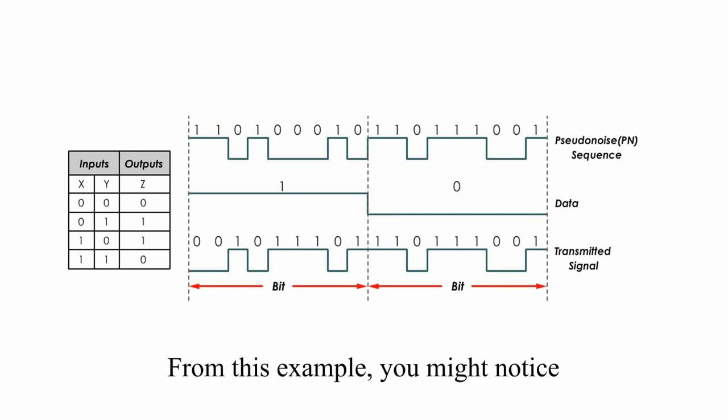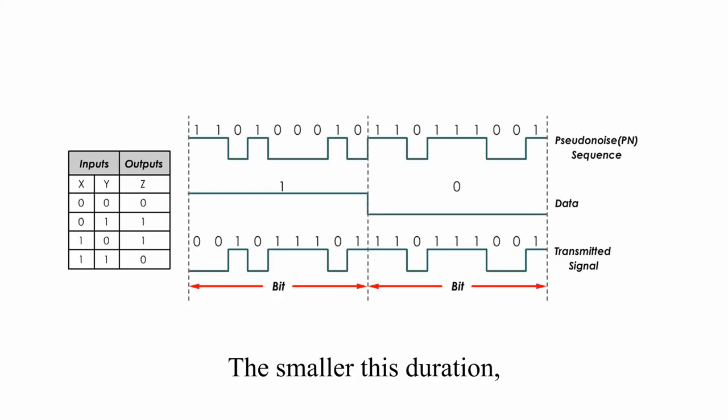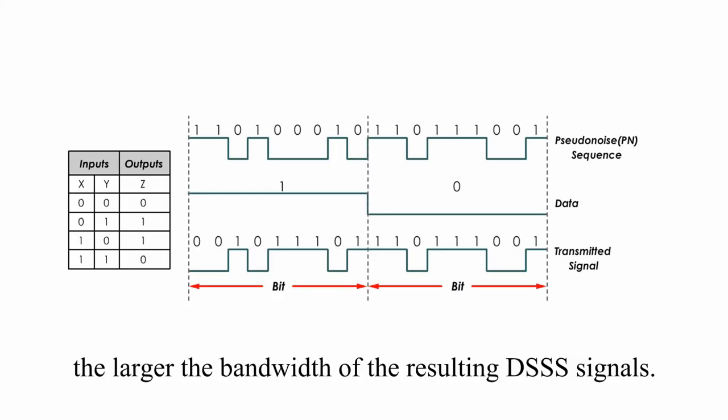From this example, you might notice the PN code consists of a radio pulse that is much shorter in duration than the original data signal, like 10 times shorter. The smaller this duration, the larger the bandwidth, the resulting DSSS signals.